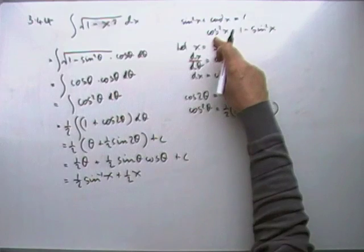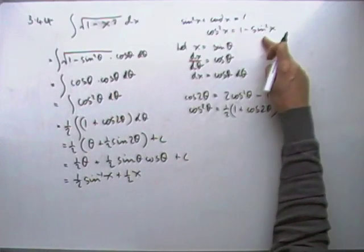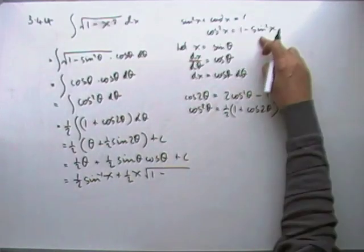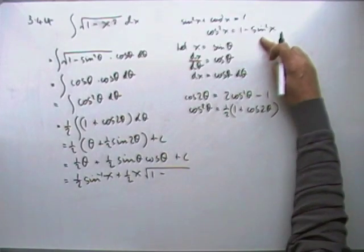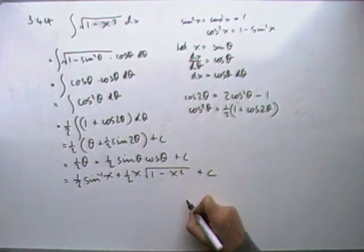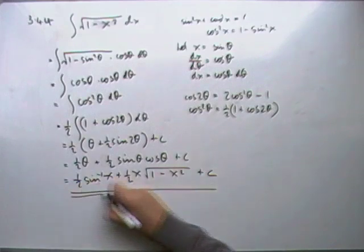And cos θ. Well, cos²θ is 1 - sin²θ, so cos will be the square root of 1 - sin²θ. Sin θ was x, so sin²θ will be x², plus C. And that's the final answer.